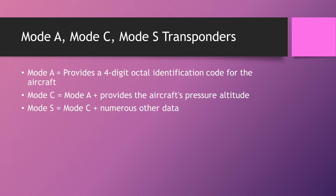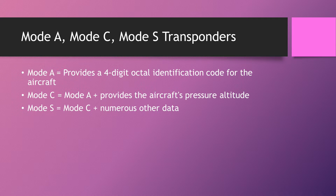Mode S transponders are Mode C transponders but, as well as the code and pressure altitude, they also transmit a lot more data such as call sign, altitude, and autopilot selected values — heading, speed, and so on. On the sim, every transponder is a Mode C transponder. We currently don't use Mode S because it would require a lot of recoding, so hopefully it'll be with us in a few years. The pilot clients make it impossible to simulate a Mode A transponder, so everything will be a Mode C transponder.